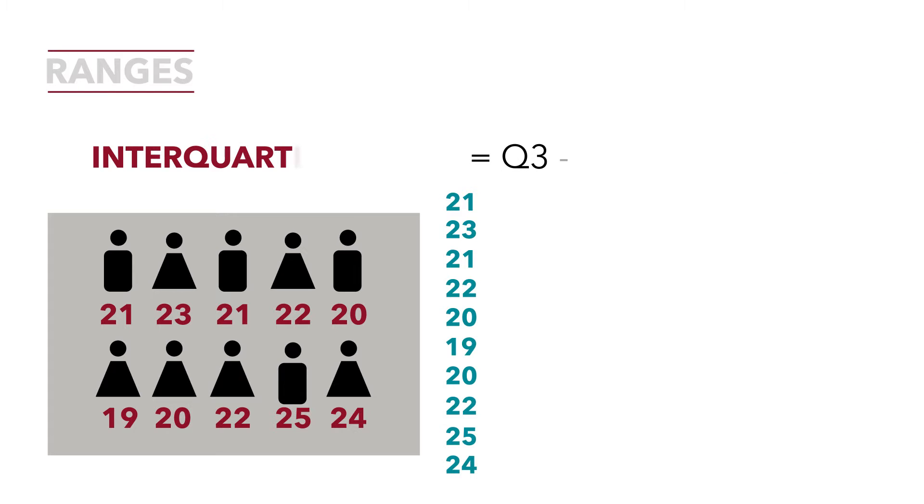To calculate the interquartile range we need to divide our data into quartiles or fourths. It's exactly like what we did when we calculated a median which divided our data into two equal parts. So the first thing we have to do is order our data from low to high. Here you can see we've reordered our data from low to high.